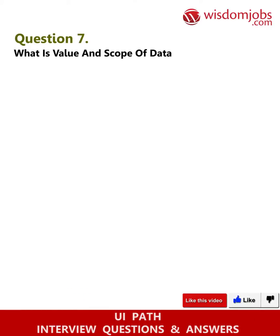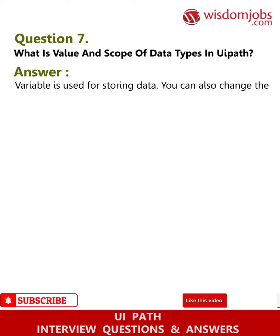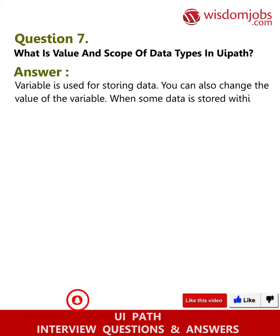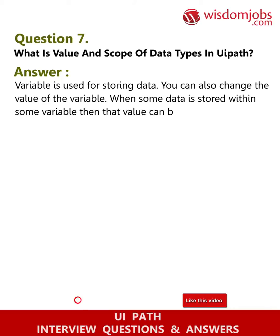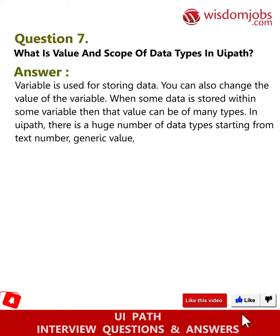Question seven: What is the value and scope of data types in UiPath? Answer: A variable is used for storing data. You can also change the value of a variable. When data is stored within a variable, that value can be of many types. In UiPath, there are a huge number of data types, starting from text, number, generic value, time, date, and data tables.